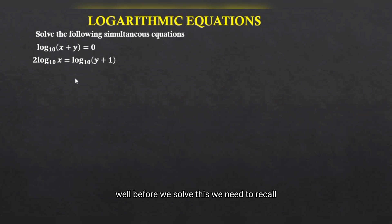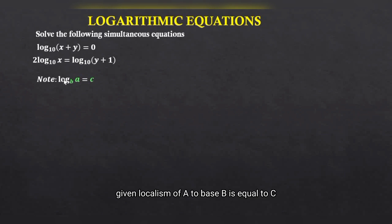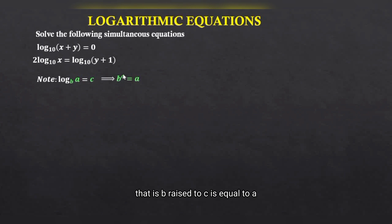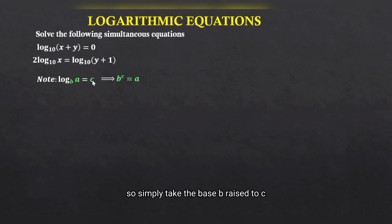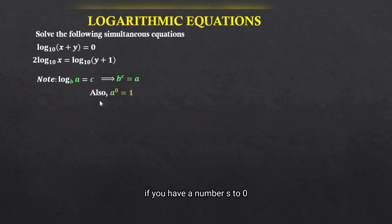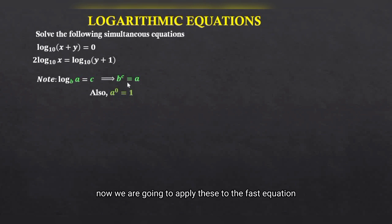Before we solve this, we need to recall that given logarithm of a to base b is equal to c, this can be expressed in index notation as b raised to c is equal to a. You simply take the base b, raise it to c, and that will be equal to a. Also, if you have a number raised to 0, the result is equal to 1.